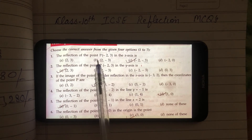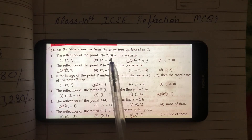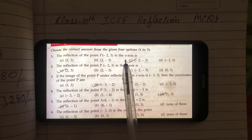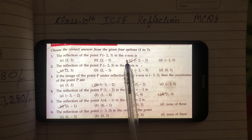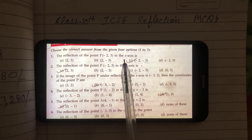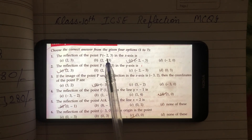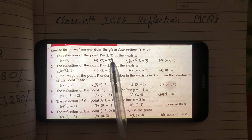The reflection of the point P(-2, 3) in the X-axis. Jab reflection X-axis mein ho, it means X-axis ko as a mirror consider karna hai. Then X-coordinate change nahin hoga, Y-coordinate change hoga. Jaise ki yahan par minus 2 hai, ye X-coordinate hai, ye change nahin hoga — minus 2 remains the same — but Y-coordinate change hoga. Ye 3 hai, to iski value minus 3 ho jayegi.